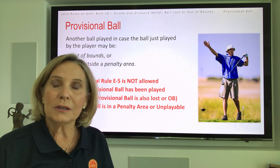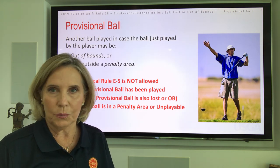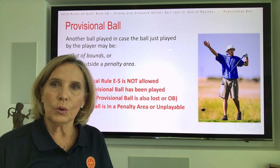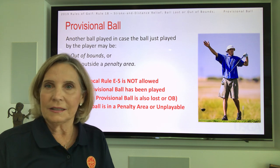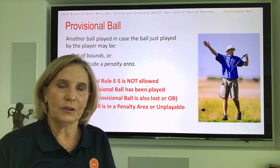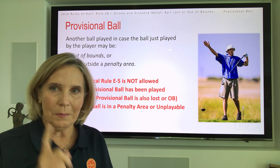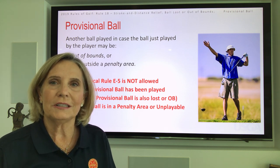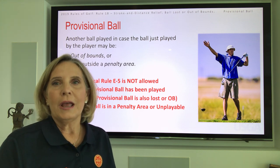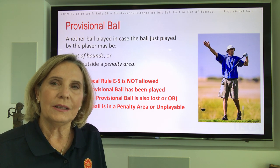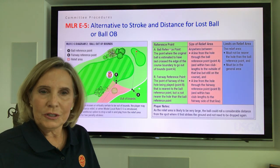A local rule is something that is not part of the 24 basic rules — it must be implemented and adopted. You will not see a player on the PGA Tour on a Sunday afternoon implementing Local Rule E5. So make the decision before you leave the tee: will I play a provisional, or will I go forward and implement the local rule adopted by this championship?